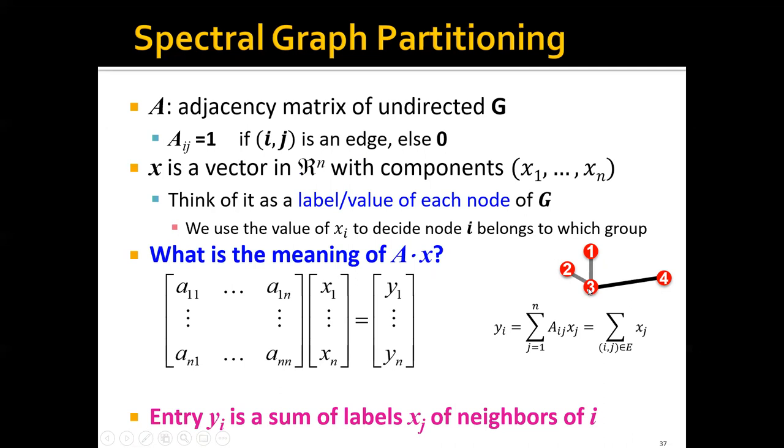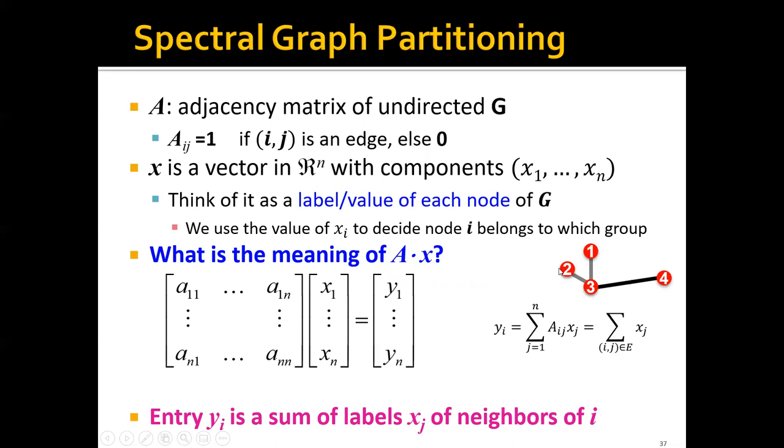So basically, let's say that if we want to compute y3, which is the y corresponding to this node, we will just take the sum of all the neighbors of node 3. So basically, y3 would be x2 plus x1 plus x4.